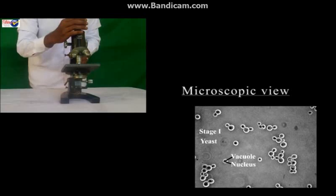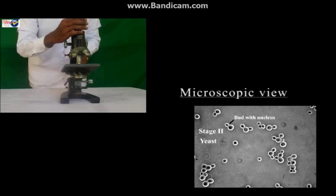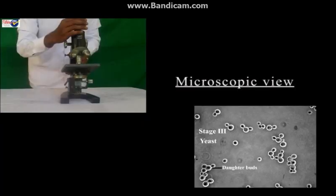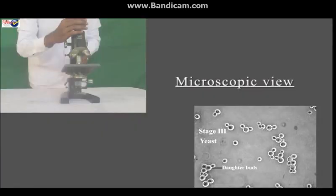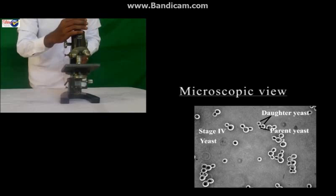Observations: Yeast is oval or spherical in shape. It is a unicellular organism. In the second stage, yeast shows a small growth on it called a bud. In the third stage, in some situations, many such chains of buds are seen on the parent cell. This process is called budding. On maturity, the buds get separated from the parent cell to form and grow as a new organism.